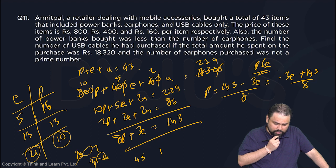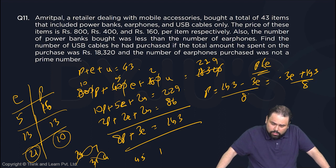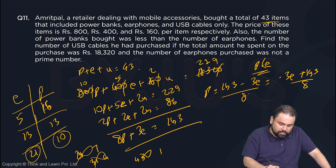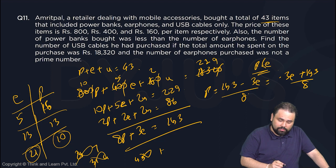And then it would be 45 and 1. If earphones is 45, but the total number of items is 43, this is not possible. So the only possibility is 21 and 10. If it's 21 and 10, then U automatically becomes 43 minus 31, which is 12.